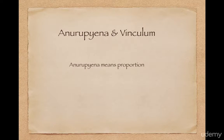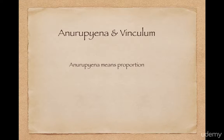Till now we have seen examples solved using Nikhilam or Parvartiya method. Consider the case when Nikhilam or Parvartiya is not possible to be applied, but if the divisor is multiplied or divided with some factor then it will be possible. Here comes the new concept which is called Anurupiena. In this method we multiply or divide the divisor by some factor and convert it in such a form that we can apply Nikhilam or Parvartiya method.